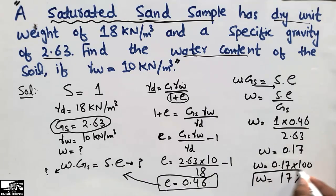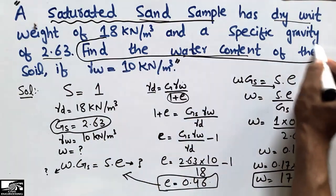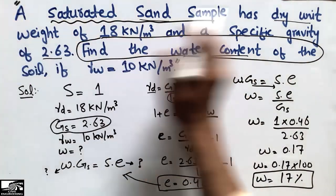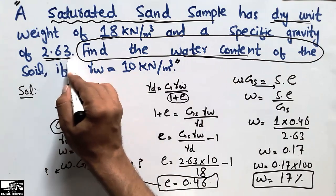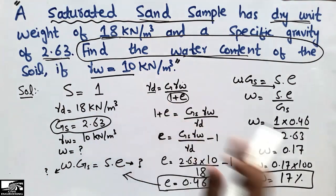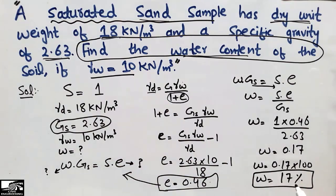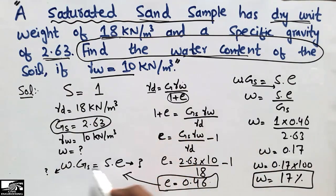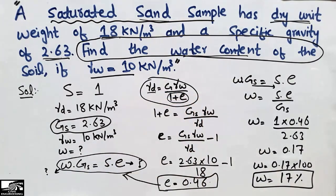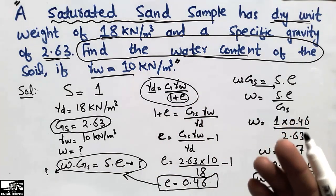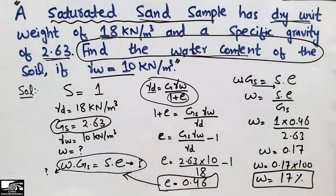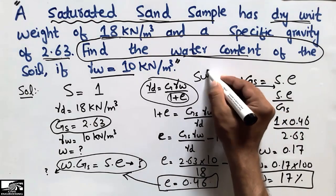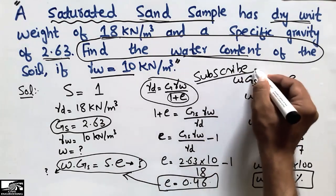So the water content of this sand sample is 17 percent — for a saturated sand sample with dry unit weight of 18 kN/m³, specific gravity of 2.63, and γw of 10 kN/m³. I used two formulas from soil mechanics to find this. Don't forget to subscribe to the channel for more C1 Engineering videos, and thank you for watching.